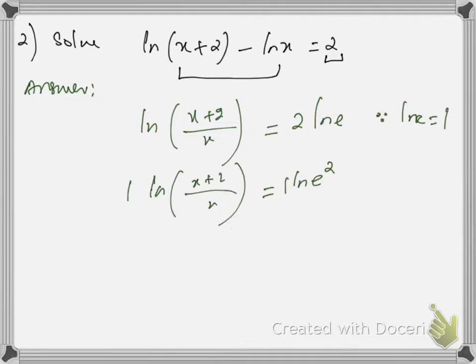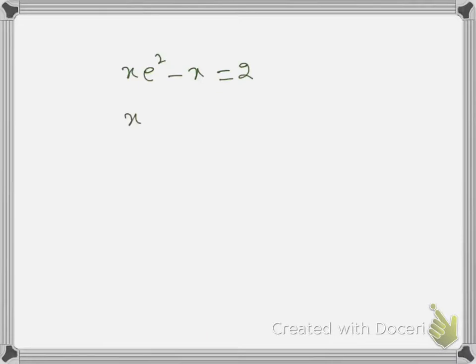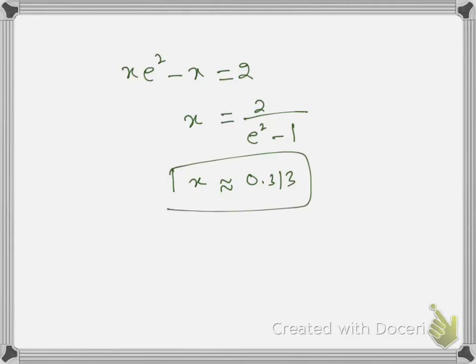Now we have coefficients 1 on both sides, so we can equate the two functions: x/(2x) ... wait, equating gives x + 2x = e². Now by taking x common we get x = 2 / (e² − 1), and its numerical value is 0.313 to three significant figures. Since we have only one answer, there is no need to check the answer.